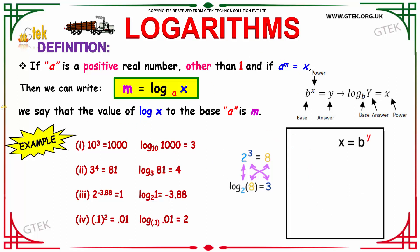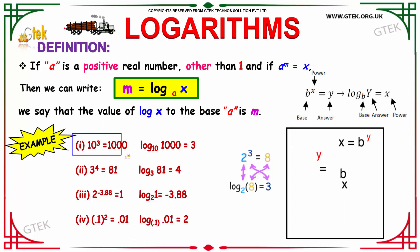Let us see some numerical examples. Our first example is 10 to the power 3 is equal to 1000. This can be written in logarithmic form as log 1000 to the base 10 is equal to 3. That is, 10 should be raised to the power 3 to get your answer as 1000.